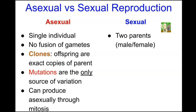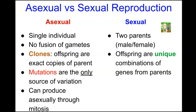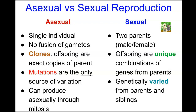Sexual reproduction, on the other hand, involves two parents — typically male and female. Offspring are unique combinations of genes from both parents, carrying both paternal and maternal chromosomes, giving a kind of blended mix of traits from both parents. The offspring are going to be genetically varied from parents and siblings.